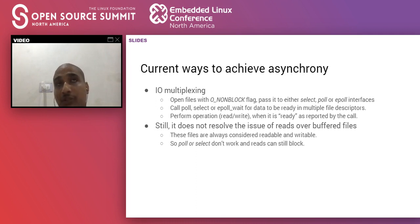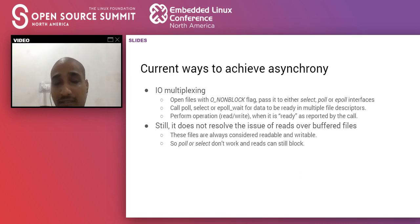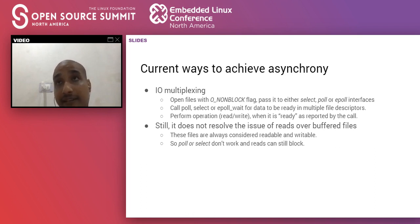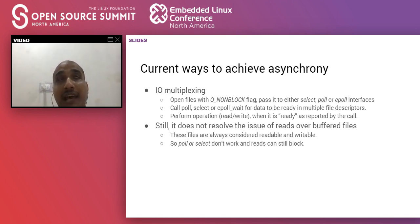Currently, to achieve asynchronous IO, we use IO multiplexing interfaces like select, epoll, or poll. These interfaces provide system calls like epoll_wait, poll, or select, which check if a file descriptor is ready for reading or writing. If the file descriptor is ready, the read can proceed without blocking, and similarly for writing. With the help of these system calls we can achieve some asynchronous behavior.